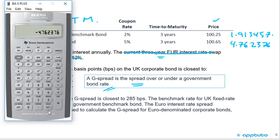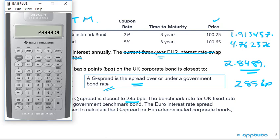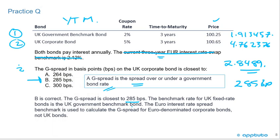Subtracting the government bond yield from the corporate bond yield: 4.762376 − 1.913457 = 2.8489%, which is 285 basis points. The correct answer is B. The G spread is closest to 285 basis points. Note: the benchmark rate for a UK fixed bond is the UK government benchmark bond; the euro interest rate swap rate is used for euro-denominated corporate bonds, not UK bonds.